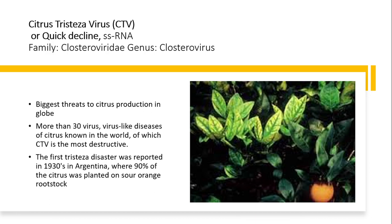The first CTV disaster was reported in the 1930s in Argentina, where 90% of the citrus was planted on sour orange rootstock. Sour orange rootstock is highly susceptible against CTV, which is why it should be avoided.